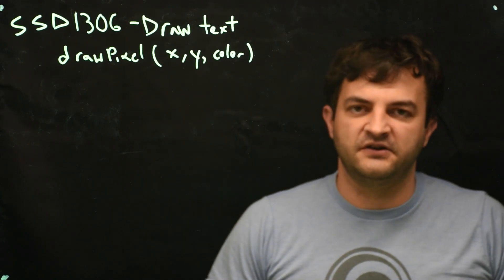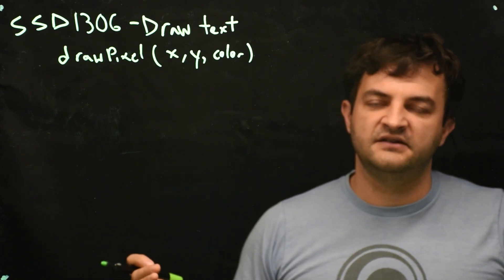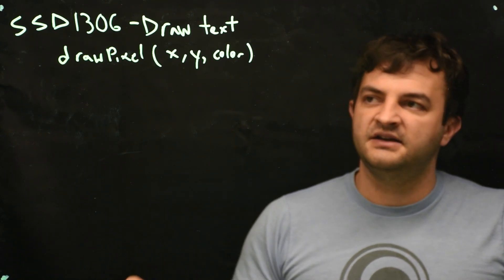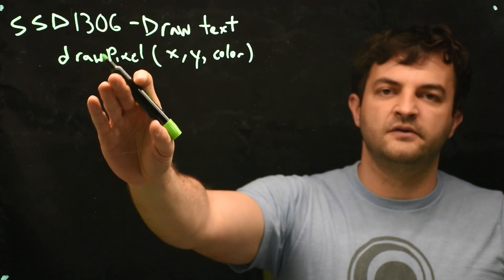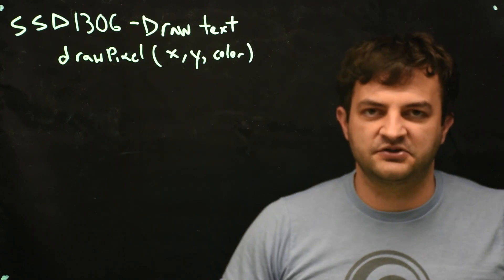So we'll have to figure out what is the letter that we want to display, what is an image of that look like, and we'll call this drawPixel function over and over to draw the letter as if it were a picture.